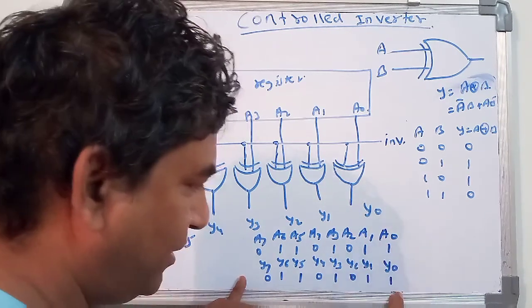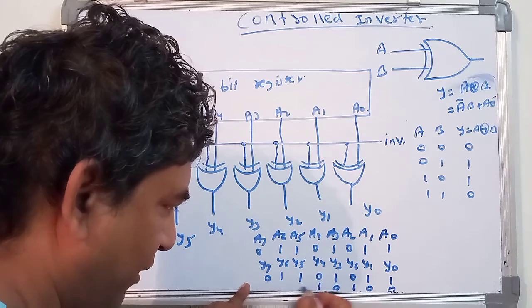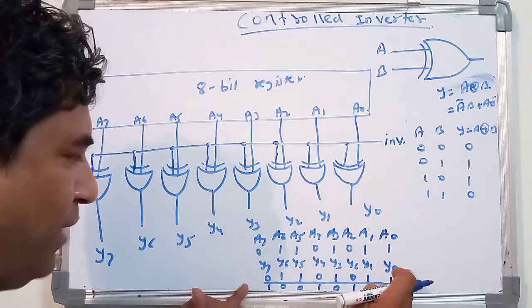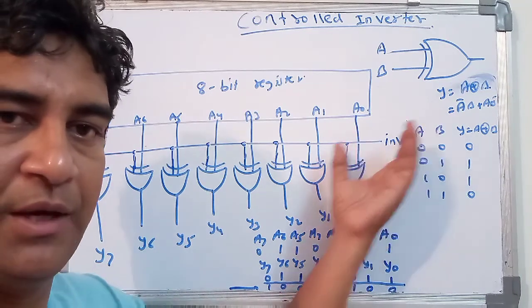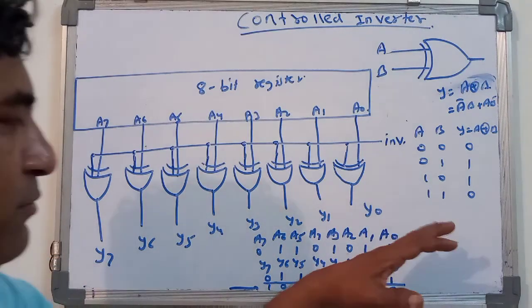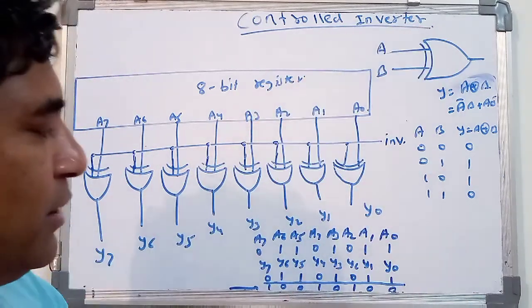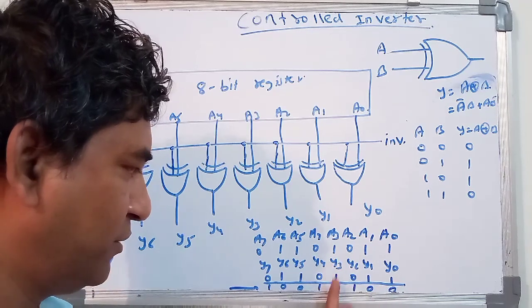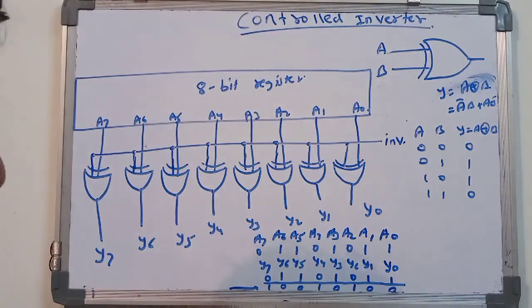But as soon as the inverter value is made high, the output gets converted into its complement: 0, 0, 1, 0, 1, 0, 0, 1. So by controlling one input of the XOR gate, this controlled inverter works. When complement is produced, the one's complement is generated. The output values are: Y0=0, Y1=0, Y2=1, Y3=0, Y4=1, Y5=0, Y6=0, Y7=1.